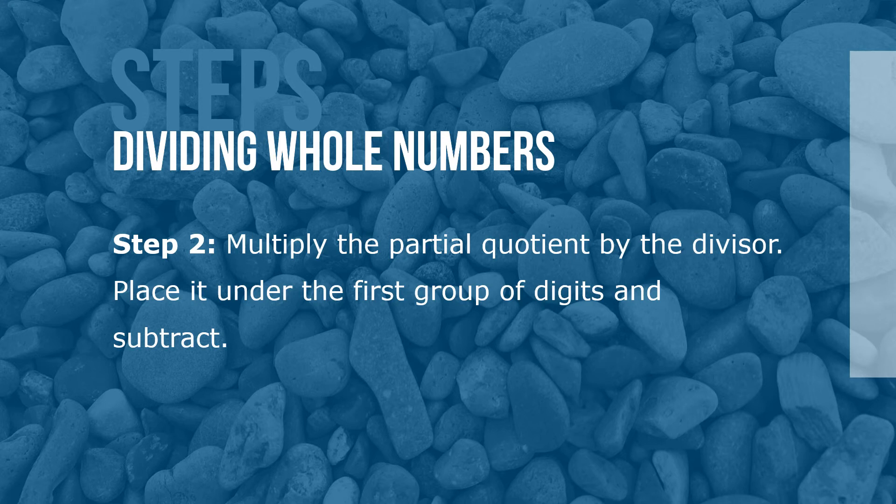Step 2: Multiply the partial quotient by the divisor. Place it under the first group of digits and subtract.